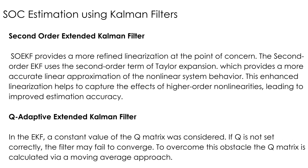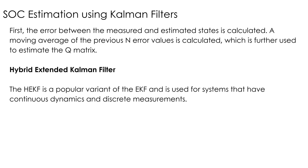In the Q-adaptive extended Kalman filter, the Q matrix, which was initially static in the EKF, is now calculated in every iteration using a moving average approach. In the hybrid extended Kalman filter, the continuous system is converted to a discrete system, and the extended Kalman filter algorithm is applied — this version provides its own advantages.